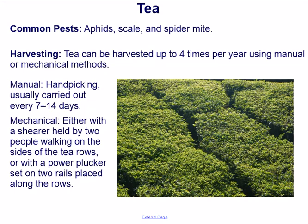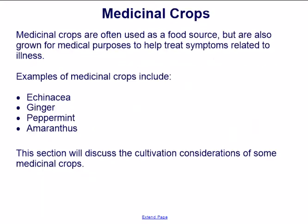Manual hand picking is usually carried out every 7 to 14 days. Mechanical harvesting is done either with a shearer held by two people walking on the sides of the tea rows, or with a power plucker set on two rails placed along the rows.